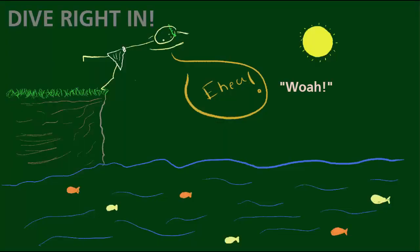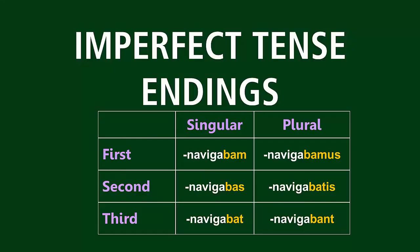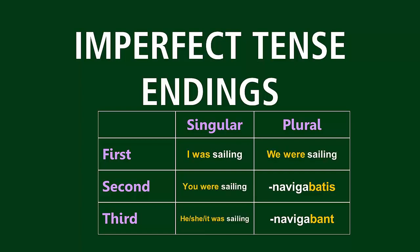In the last couple lessons, we talked a lot about sheep. Well, actually we were learning the imperfect tense endings and figuring out how to translate it with the English helping verb 'was' or 'were.' Today we're moving on from talking about sheep.